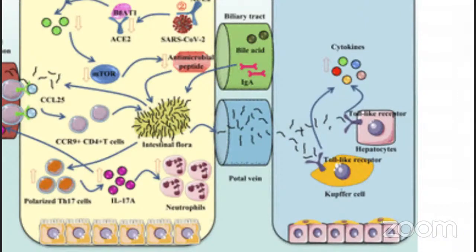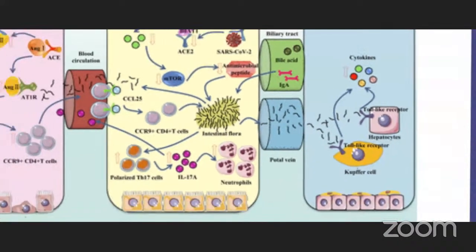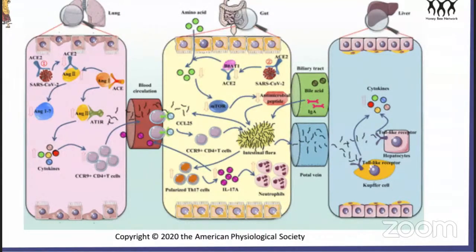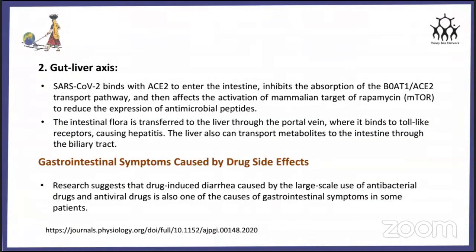Gastrointestinal symptoms caused by drug side effects: antibiotic-associated diarrhea is the most common adverse reaction to antibacterial drugs, especially macrolides, cephalosporins, and beta-lactam antibiotics. A retrospective analysis from China of 260 SARS-CoV patients found that macrolides, fluoroquinolones, or cephalosporin antibiotics were used, and the proportion of patients with diarrhea was 24.2%. Antiviral drugs including chloroquine phosphate, lopinavir, and remdesivir also cause diarrhea. Drug-induced diarrhea caused by large-scale use of antibacterial and antiviral drugs is therefore also one of the causes of GI symptoms in some patients. Now Tanya will tell you about diagnosis and preventive measures.